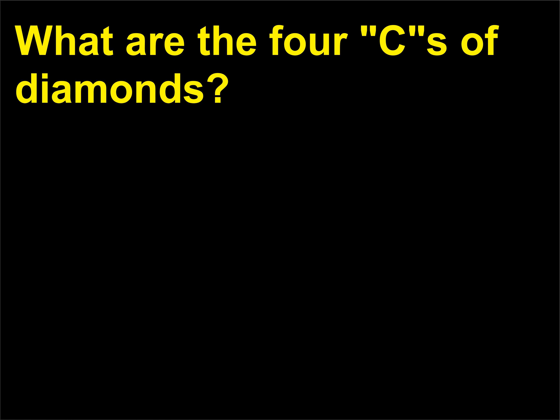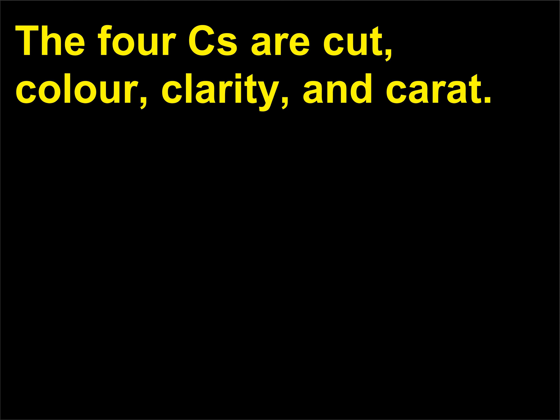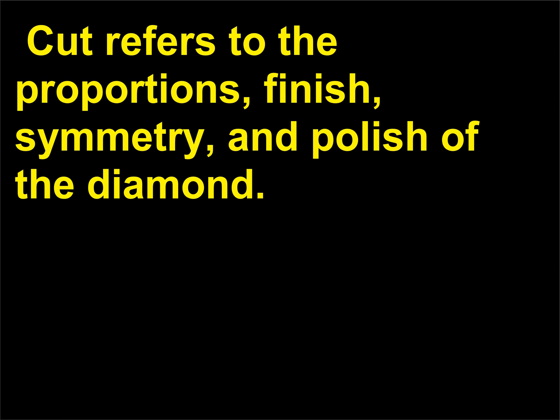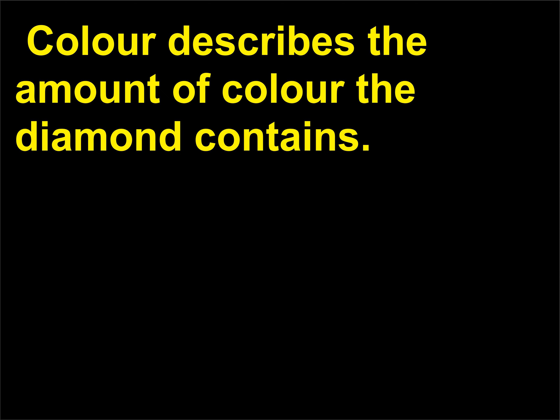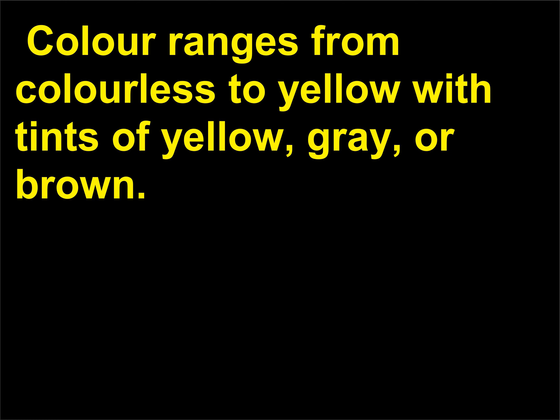What are the 4 Cs of diamonds? The 4 Cs are cut, color, clarity, and carat. Cut refers to the proportions, finish, symmetry, and polish of the diamond — these factors determine the brilliance of a diamond. Color describes the amount of color the diamond contains, ranging from colorless to yellow with tints of yellow, gray, or brown.